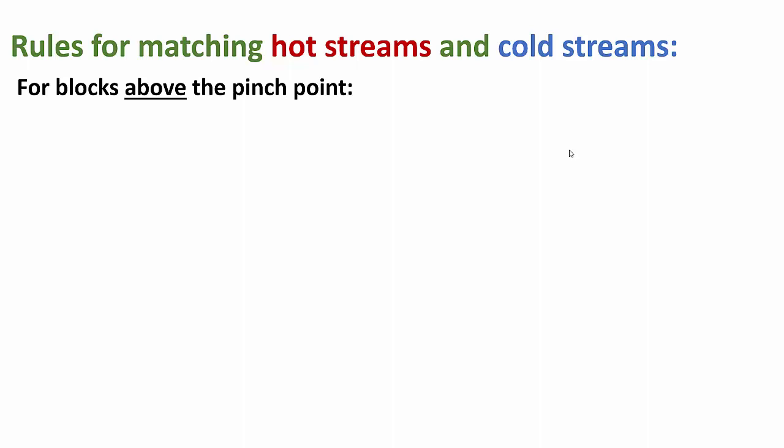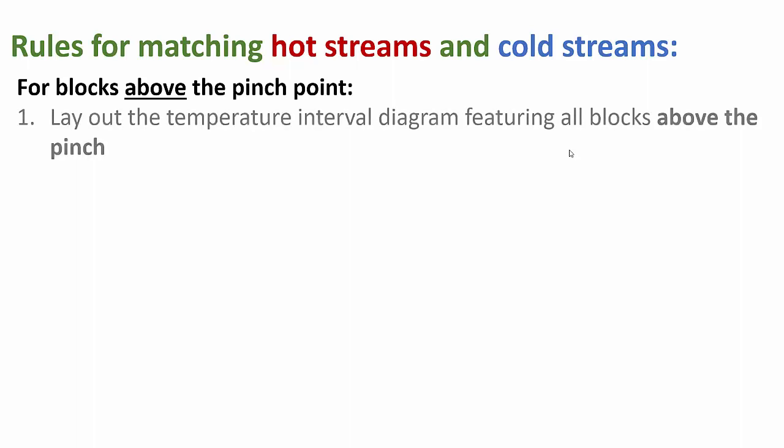Before we begin matching hot streams and cold streams, we have to follow some rules. We're going to begin above the pinch point. There are several rules for matching hot and cold streams above the pinch point, and you have to follow all of them. We first lay out the temperature interval diagram featuring all blocks above the pinch. We do not include any blocks below the pinch.